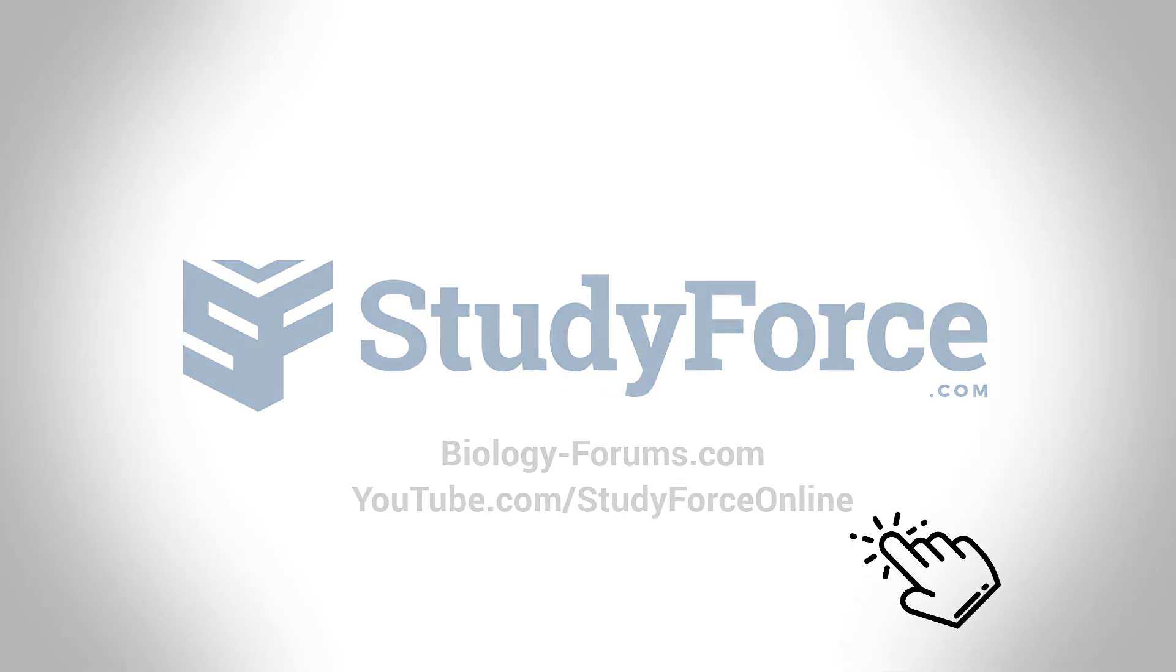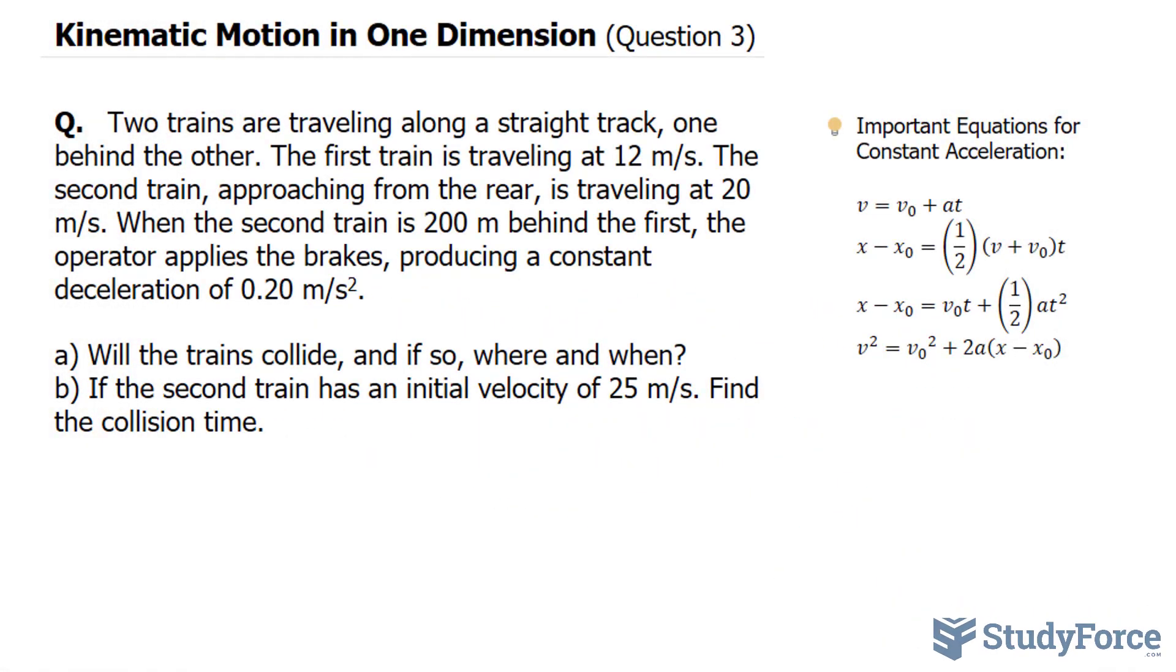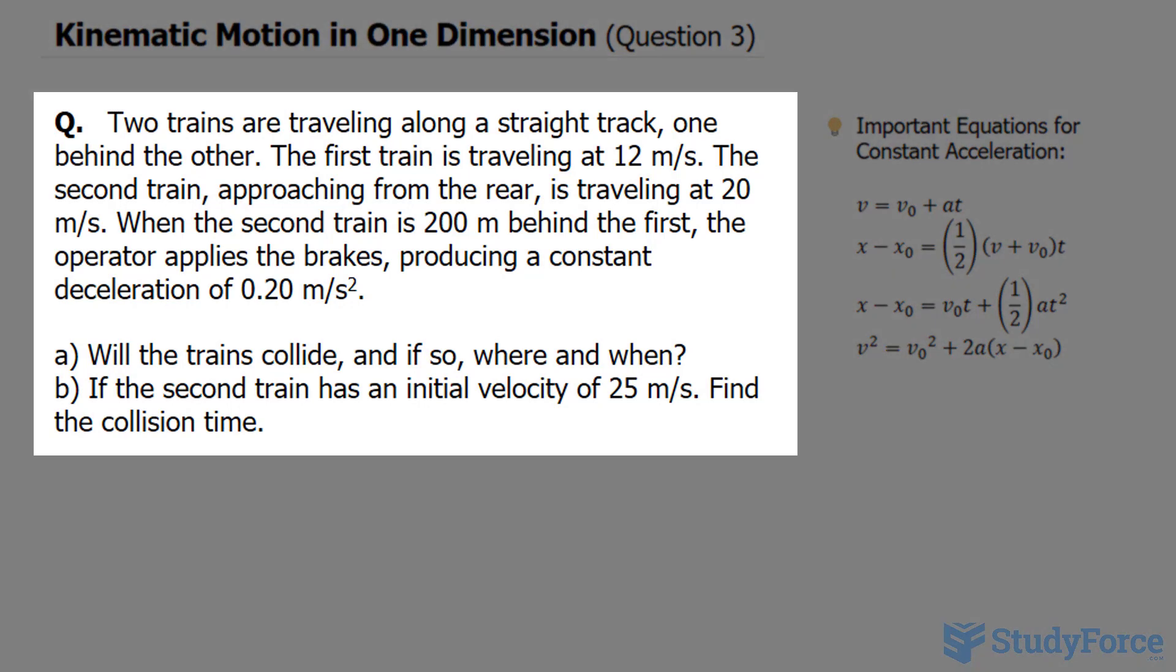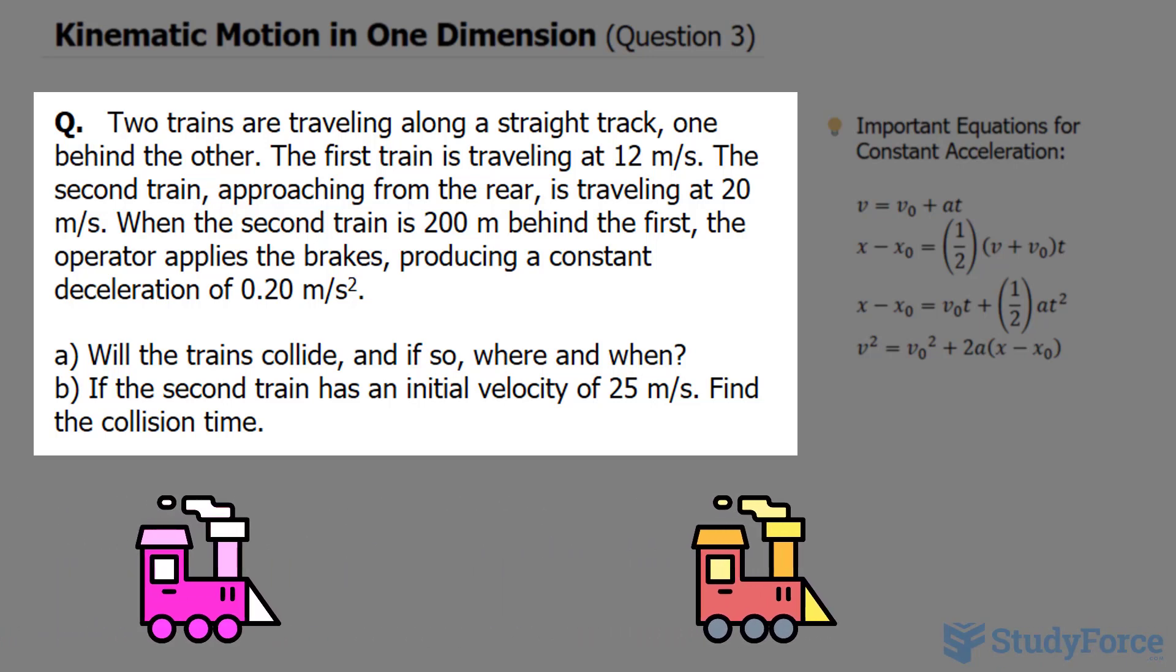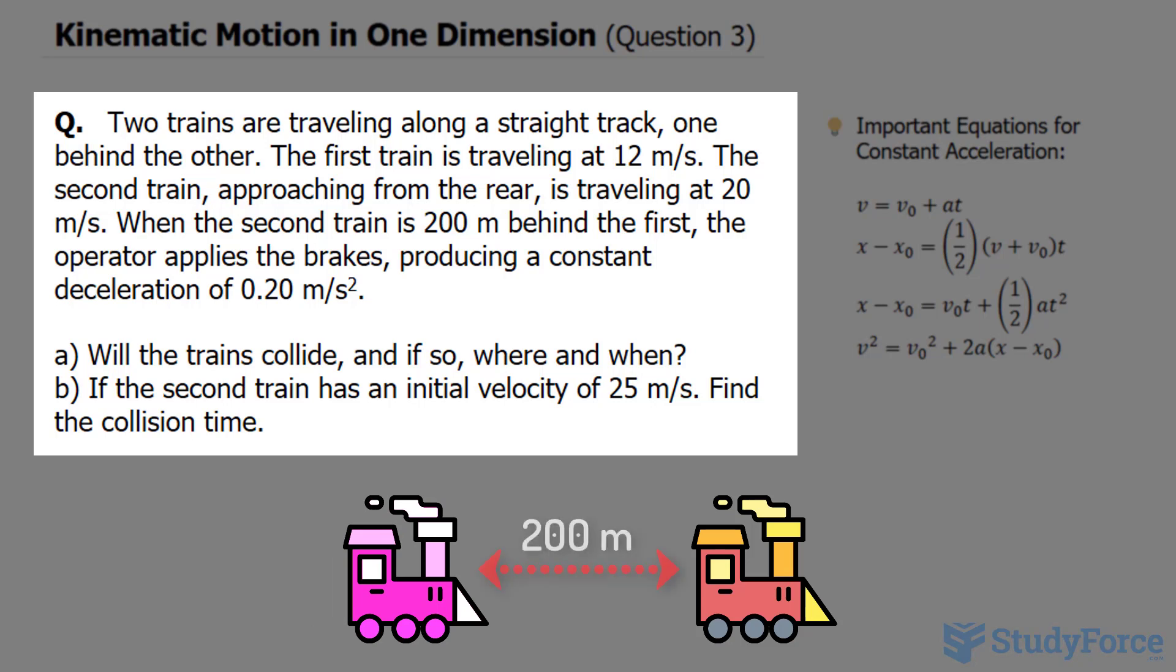Welcome back to question 3 where we discuss kinematic motion in one dimension. This time the question reads: two trains are traveling along a straight track, one behind the other. The first train is traveling 12 meters per second. The second train approaching from the rear is traveling at 20 meters per second. When the second train is 200 meters behind the first, the operator applies the brakes, producing a constant deceleration of 0.20 meters per second squared.